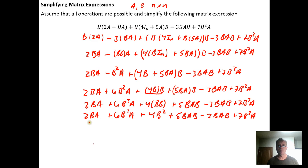So 2BA, is there any other BA term? There isn't, so that's as simplified as it can get. Here I have a 6B²A, is there another B²A term? There is down here, so this can be combined with this. And we want to recognize that this and this cannot be rewritten as B²A because we can't change the order of the multiplications.